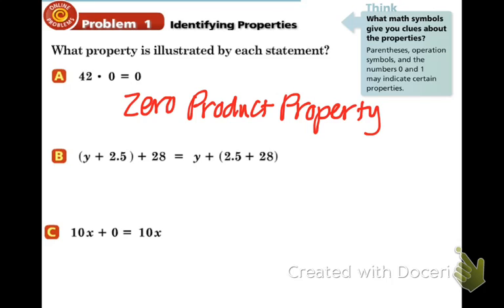In part B, you can see that we are having parentheses - remember, that's grouping. So we're using, oh wait a second, are we adding or multiplying? We're adding. So this means that we have the associative property of addition.